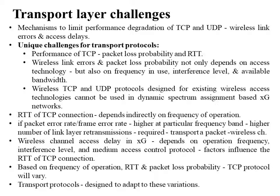Wireless link errors and hence packet loss probability not only depend on the access technology but also on the frequency in use, interference level, and available bandwidth. Therefore, wireless TCP and UDP protocols designed for existing wireless access technologies cannot be used in dynamic spectrum assignment based next generation networks. The round trip time of a TCP connection depends indirectly on the frequency of operation. For example, if the packet error rate is higher at a particular frequency band, a higher number of link layer retransmissions are required.